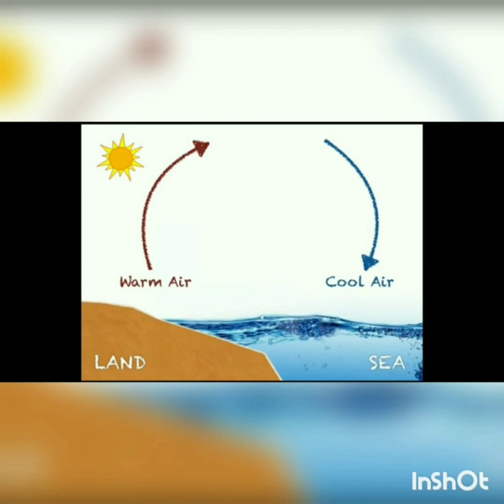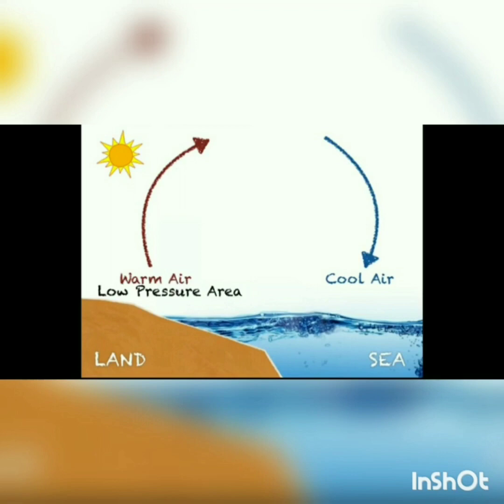Since warm air is leaving the area over the land, it creates low pressure over the surface of the land. Air is going away from the land, taking air particles away — therefore, there will be less air pressure on the land. But over the seas, the cool air is sinking down, drawing air particles down and creating an area of high pressure.